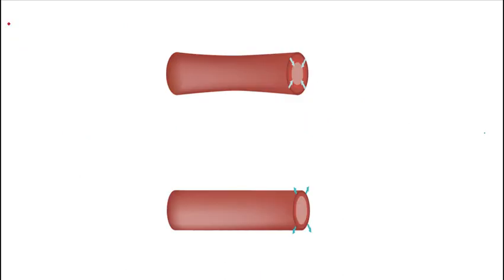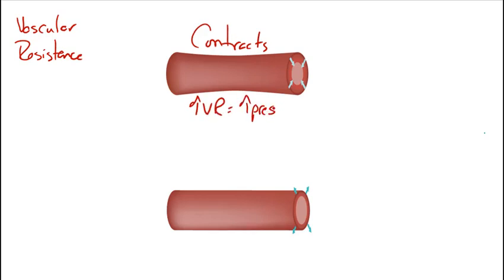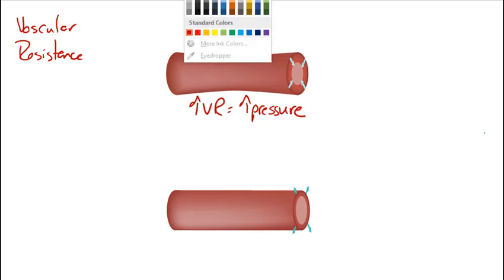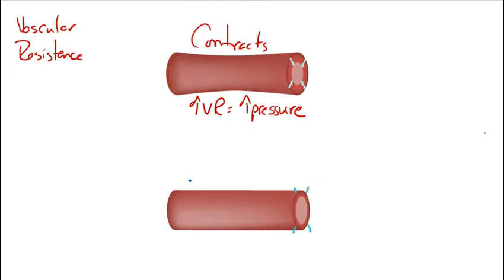Back in A&P I discussed vascular resistance, but let's do a quick review. When the smooth muscle in a blood vessel contracts, vascular resistance increases. This also increases the pressure in the vessel. This would represent the condition I just mentioned about increased afterload. So the heart is going to have to pump very hard to overcome the pressure in these vessels to move that blood forward.